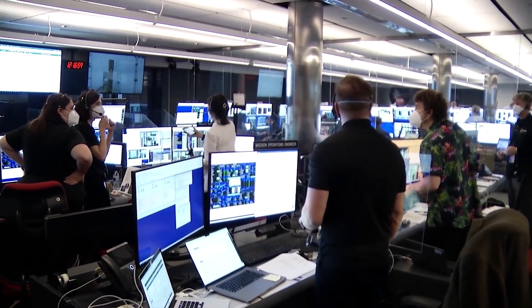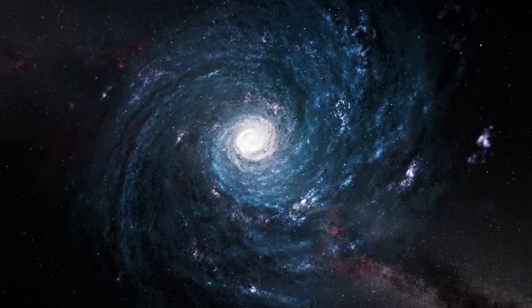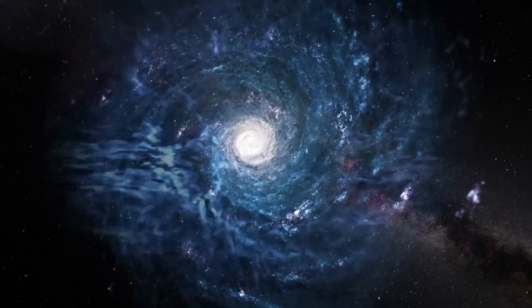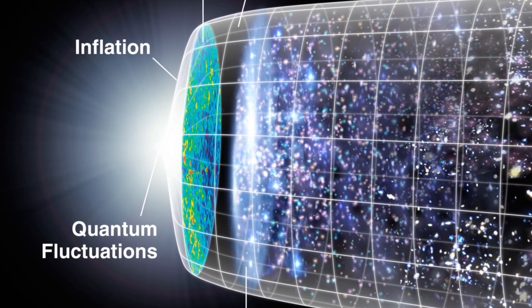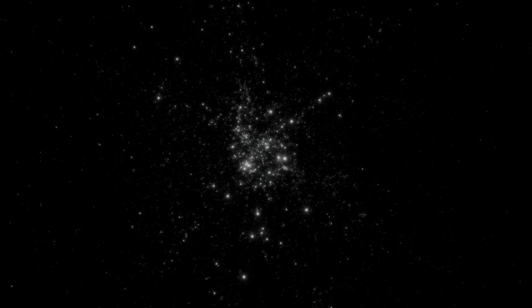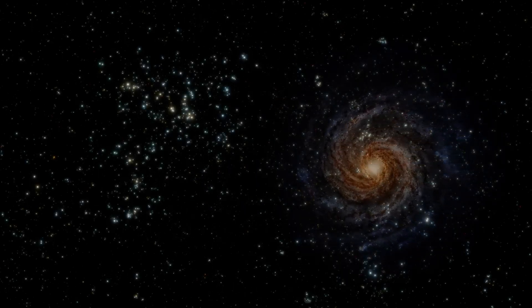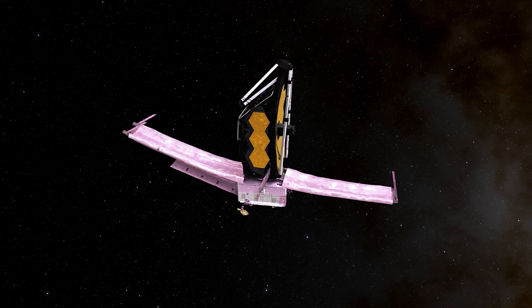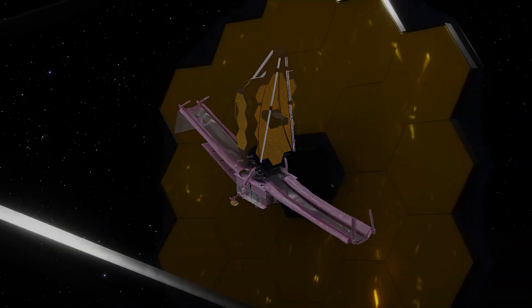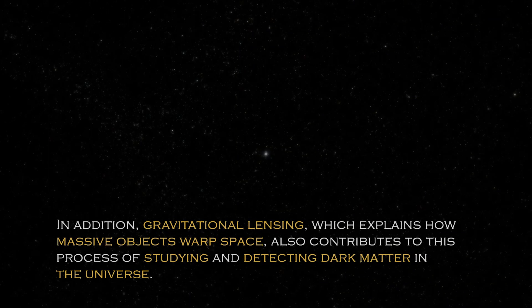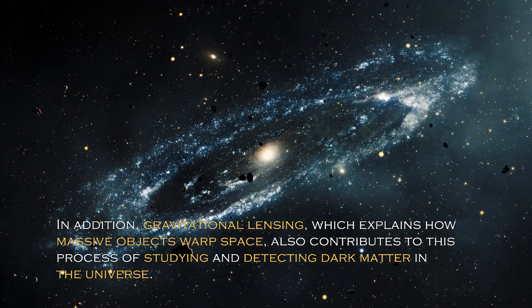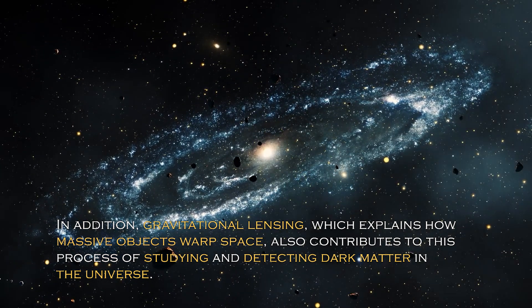Technological advancement has allowed scientists to introduce concepts such as dark matter, dark energy, and the continued expansion of the universe, all supporting the Big Bang theory. The theory of universal expansion suggests that the universe is constantly expanding, pushing galaxies and galactic clusters farther and farther apart — a process believed to have occurred since the beginning, 13 billion years ago. Scientists postulate that dark energy is the mysterious force behind this expansion, while dark matter, invisible but present in the universe, also plays a crucial role. The James Webb telescope is a valuable resource because its high-resolution images allow astronomers to calculate the amount of dark matter in specific areas of the cosmos, and gravitational lensing — which explains how massive objects warp space — also contributes to detecting dark matter.